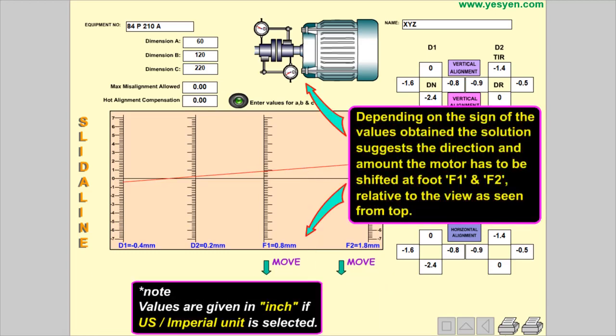Depending on the sign of the values obtained, the solution suggests the direction and amount the motor has to be shifted at foot F1 and F2 relative to the view as seen from top.